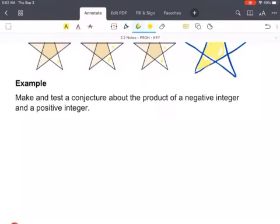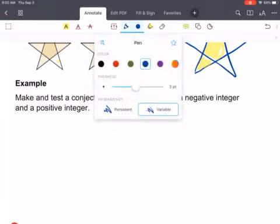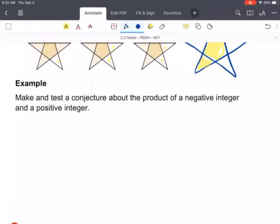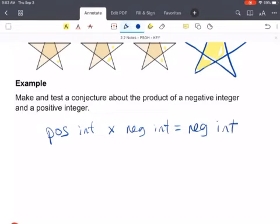Make and test a conjecture about the product of a negative integer and a positive integer. So if we were to talk about multiplying a positive integer and a negative integer, what would we get? So my conjecture, a positive integer multiplied by a negative integer would always result in a negative integer. In order to test that conjecture, we could do a bunch of different things, but let's just say 4, my favorite number, times negative 7 will give you negative 28. And that is just one example of verifying that conjecture.